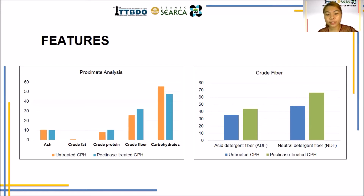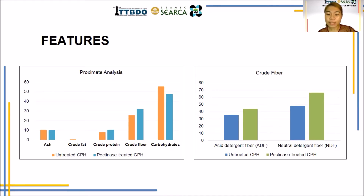On the other hand, increased acid detergent fiber and neutral detergent fiber implies that the pectinase-treated fiber at optimum conditions would take longer time to be eaten due to its decreased digestibility and dry matter intake. With this, most of its essential nutrient content such as protein, carbohydrates, and ash may be absorbed in the small intestine. This may add to potential health benefits for health-conscious individuals, since when high-fiber foods are consumed, it is expected that next food intake would be significantly reduced.